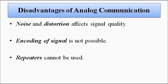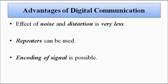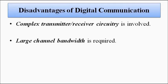The advantages of digital communication are just the opposite: noise and distortion are less, repeaters can be used, and encoding of the signal is possible, which helps transmit confidential information securely without leakage. The disadvantages are that the circuitry involved is very complicated and costly, and the bandwidth required is very high — the frequency range needed is much larger.